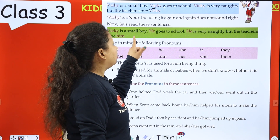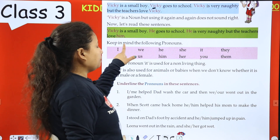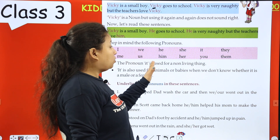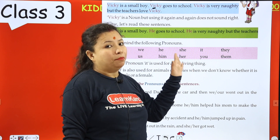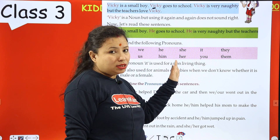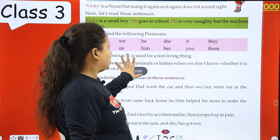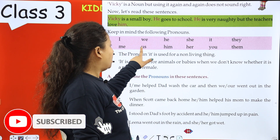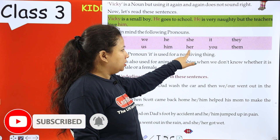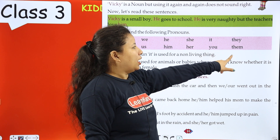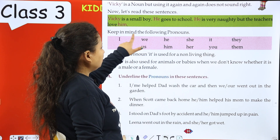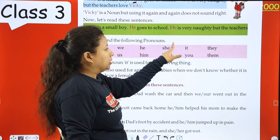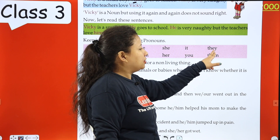Keep in mind the following pronouns: I, we, you, she, he, they, it, me, him, her, and them. We use 'he' for males like Viki. For females we use 'she' and 'her'. Other pronouns include it, you, they, and them.